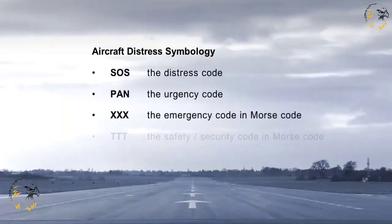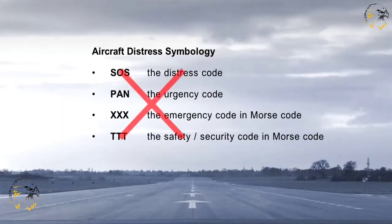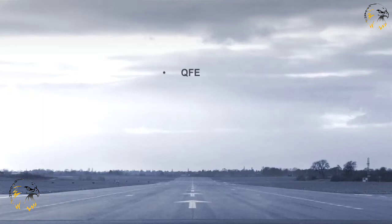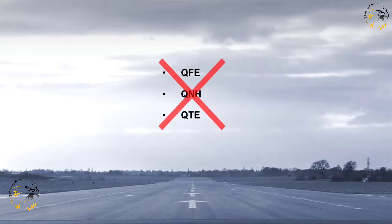Certain combinations of letters, numbers or marks may coincidentally correspond to other well-known aviation emergency coding. So to avoid any possible confusion, the following combinations of letters and symbols are not permitted. Combinations starting with the letter Q and 5-letter combinations used in the International Code of Signals are also not permitted.